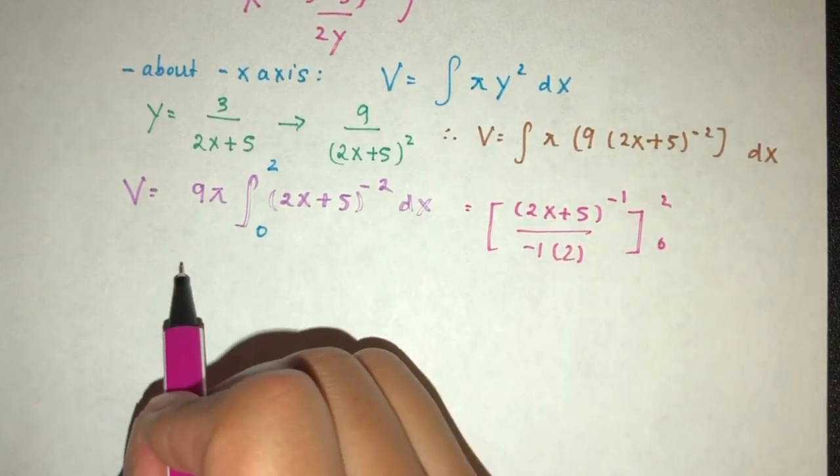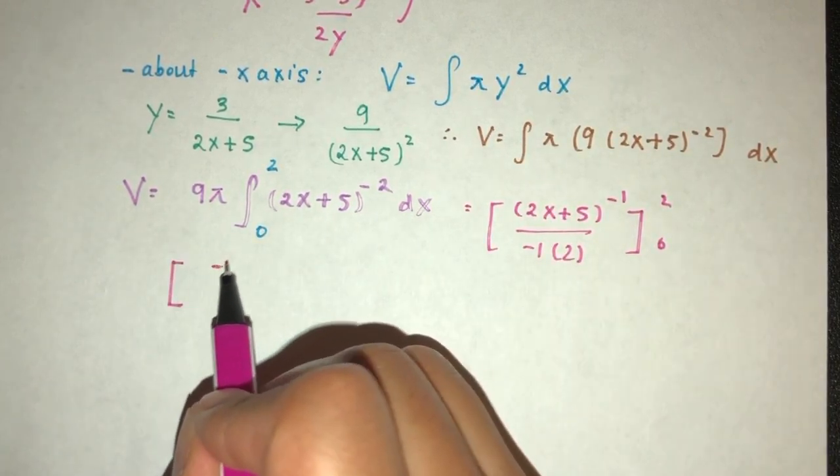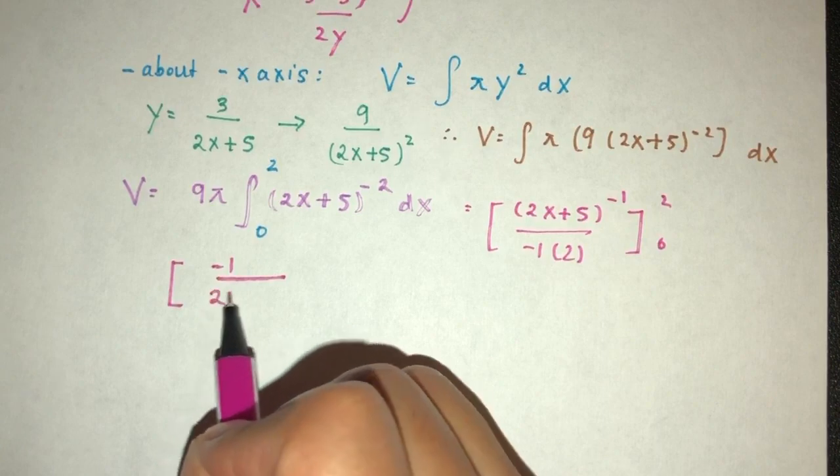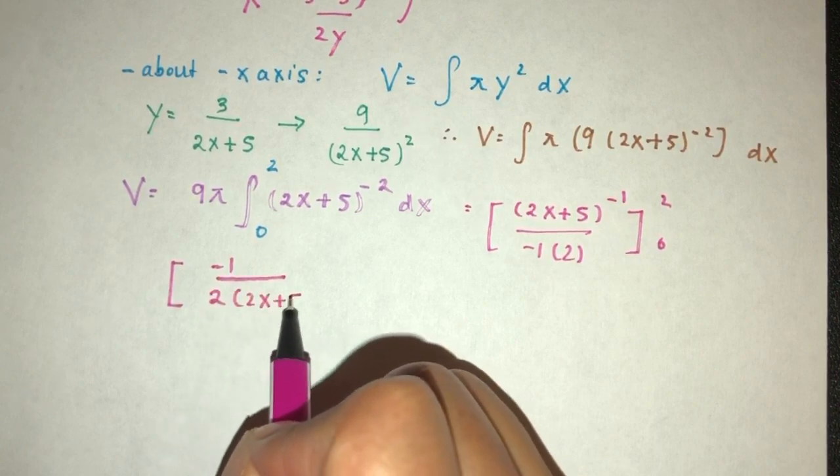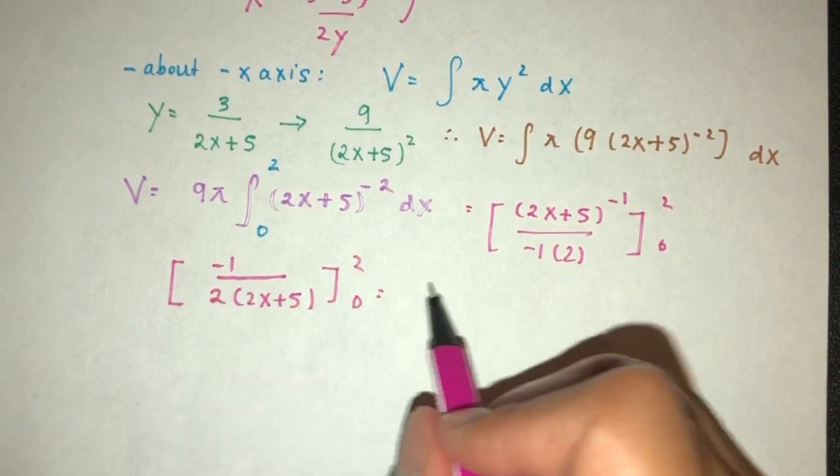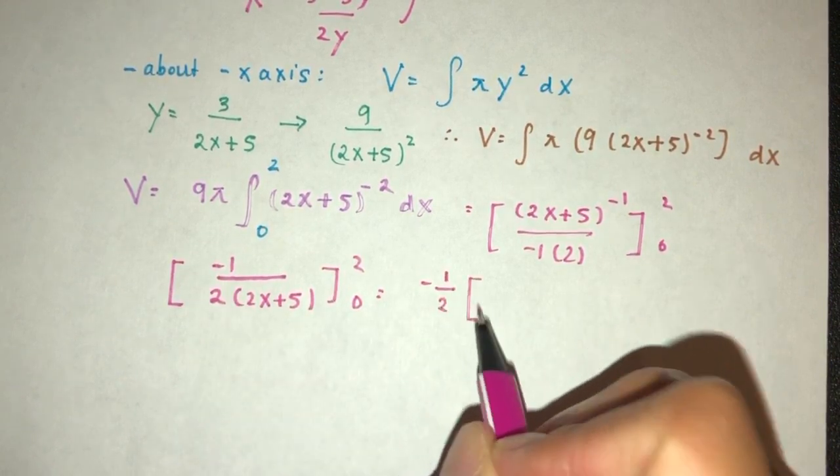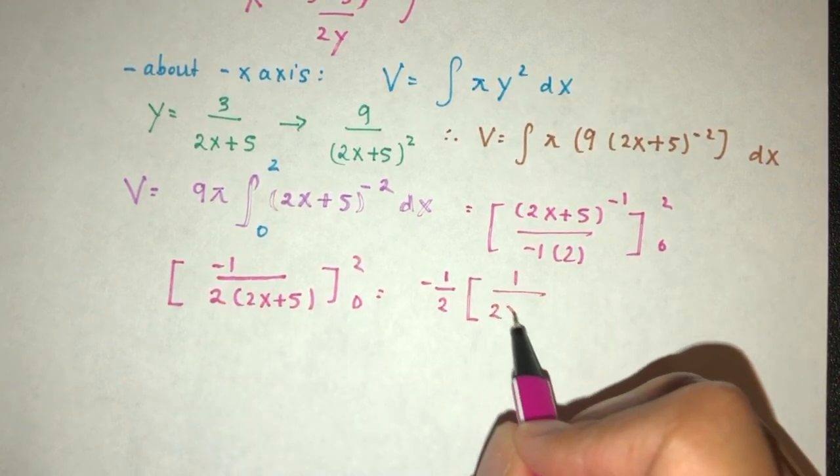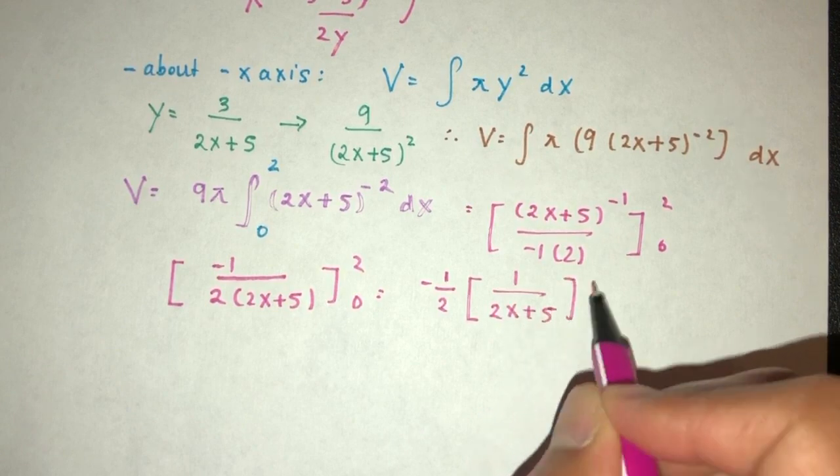Simplify. First thing we have to simplify, that will become minus 1 over 2 times (2x plus 5), limits 2, 0. Let's take this one out, minus half outside. And you have 1 over (2x plus 5). That value will be 2, 0.